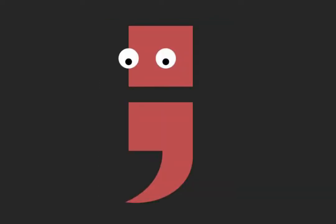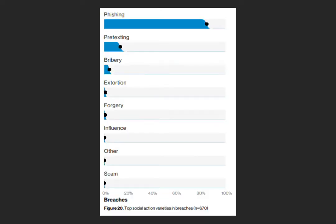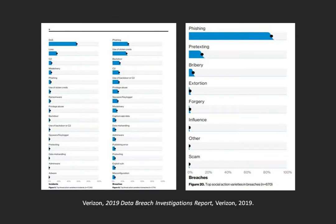With an entire subplot of an episode dedicated to just pretexting, you might think it's the biggest social engineering threat. Not so. In fact, Verizon's Data Breach Investigations Report has shown that pretexting actually comes second in most effective social engineering campaigns. The most effective? Phishing. Though phishing comes in fifth in being involved in general security incidents, when it comes to data breaches, it ranks number one.